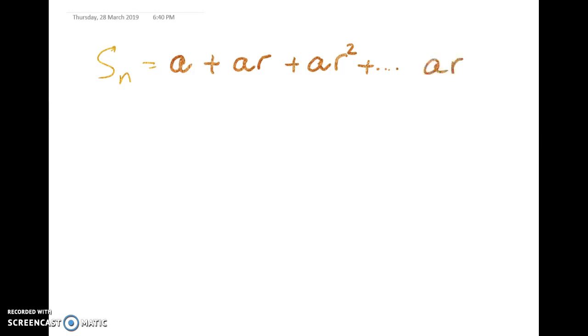Try and do this with me as we go. So here we've got the first term has got no r. The second term's got r to the power of 1. Right. So hopefully you'll see that the nth term is not a times r to the power of n but a times r to the power of n minus 1.